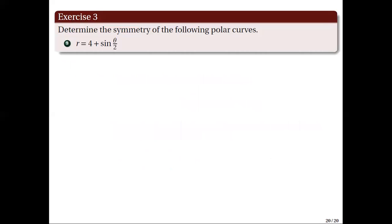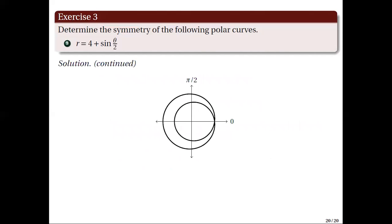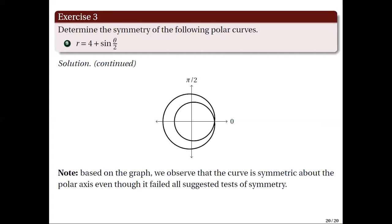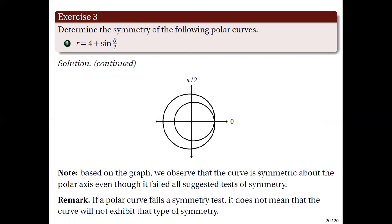The graph of the curve is shown below. Note that based on the graph, we observe that the curve is symmetric about the polar axis even though it failed all suggested tests of symmetry. Which leads us to the following remark: if a polar curve fails a symmetry test, it does not mean that the curve will not exhibit that type of symmetry.